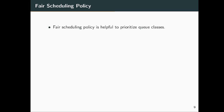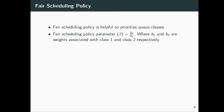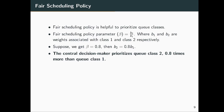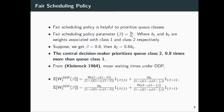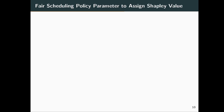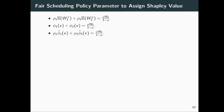For the fair scheduling policy, a parameter beta = b2/b1 is used to prioritize different classes. If beta = 0.8, then b2 = 0.8*b1, meaning the central decision maker is prioritizing queue class 2 to 0.8 times queue class 1. From Kleinrock 1964, we can obtain the mean waiting time for class 1 and class 2 under DDP. We assign this fair scheduling policy with the Shapley value. Since the sum of Shapley values equals the right-hand side of the Kleinrock conservation law, we can write rho_1 * phi_1_hat + rho_2 * phi_2_hat equal to the right-hand side.